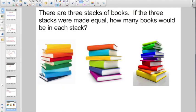Check out this one. There are 3 stacks of books. If the 3 stacks were made equal, another clue word that they want you to run the average algorithm, how many books would be in each stack? Well, let's go ahead and do some counting here.